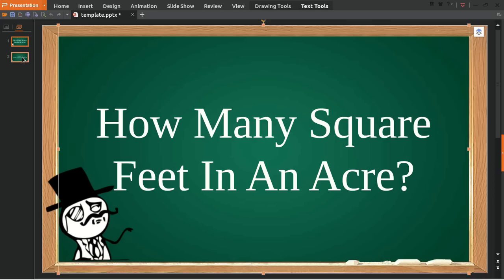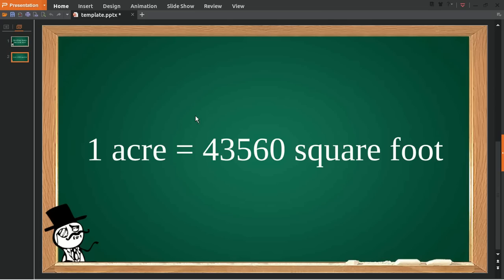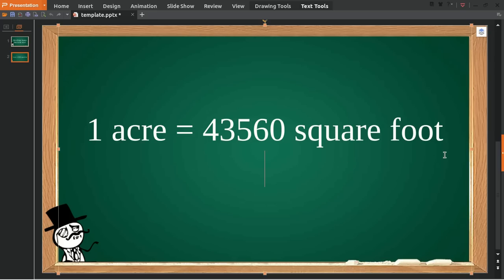To solve the problem, I have provided you with a precise answer. Here we go: one acre is equal to 43,560 square feet. So in case you want to convert a different number of acres into square feet...